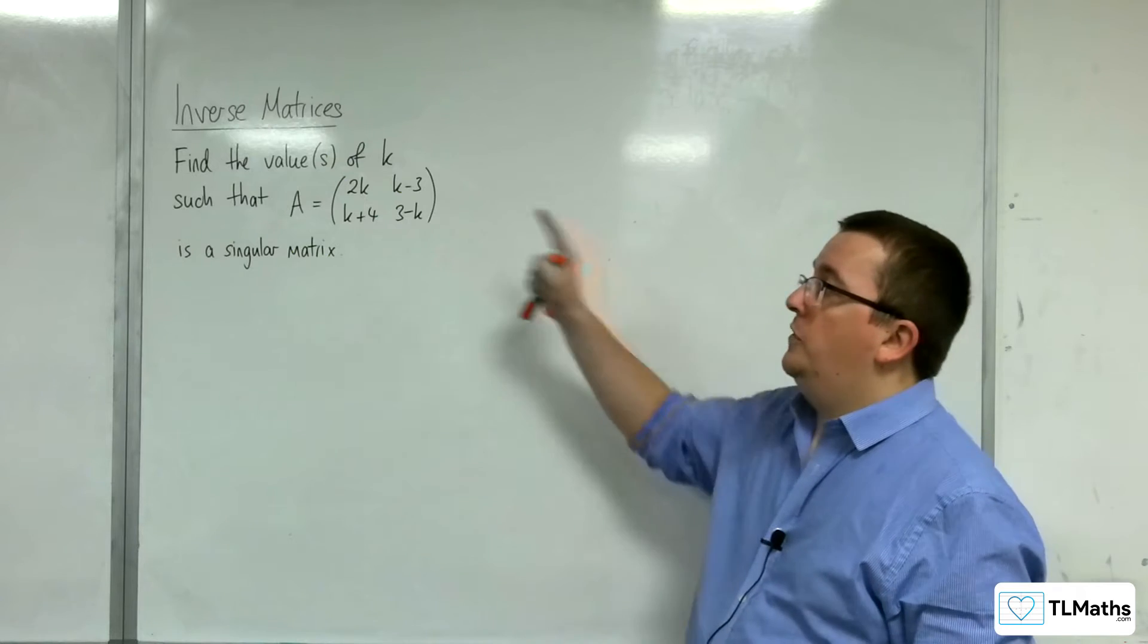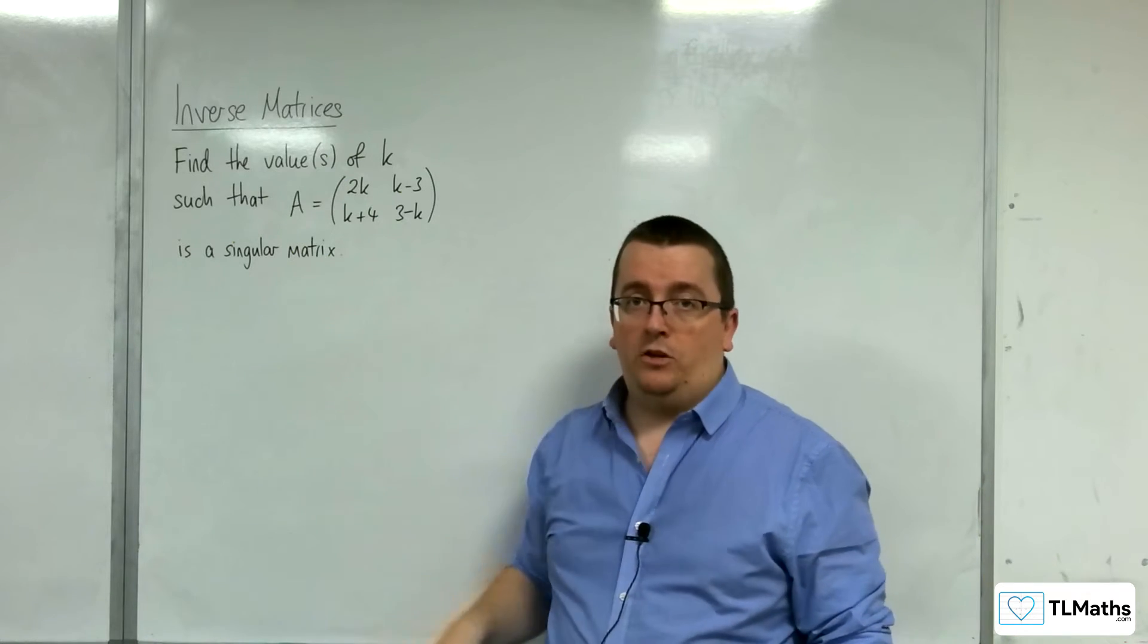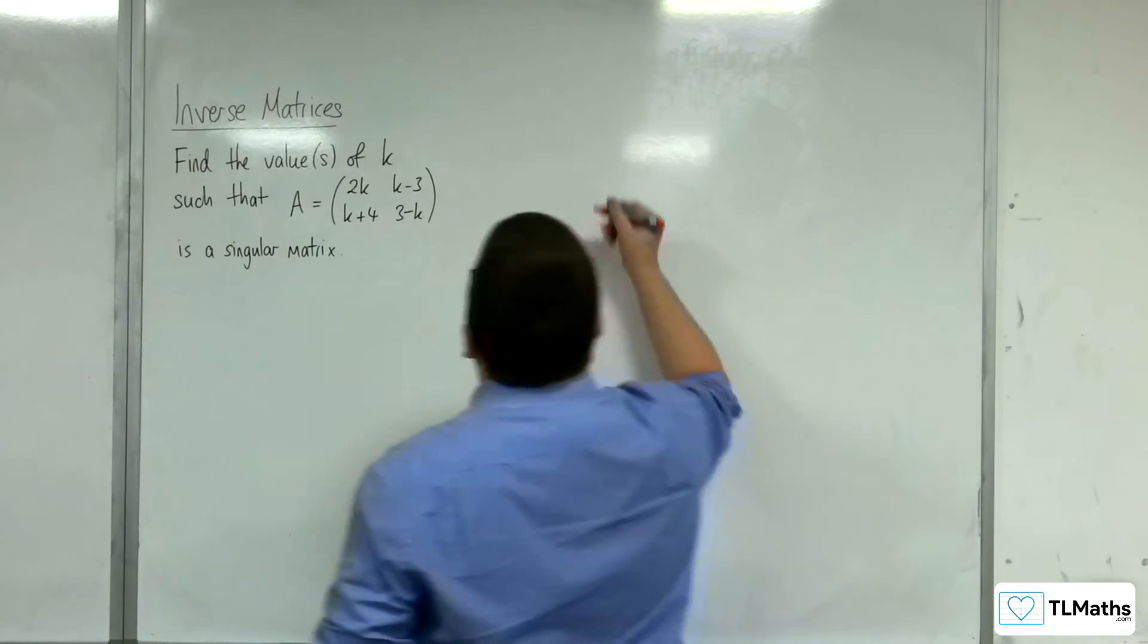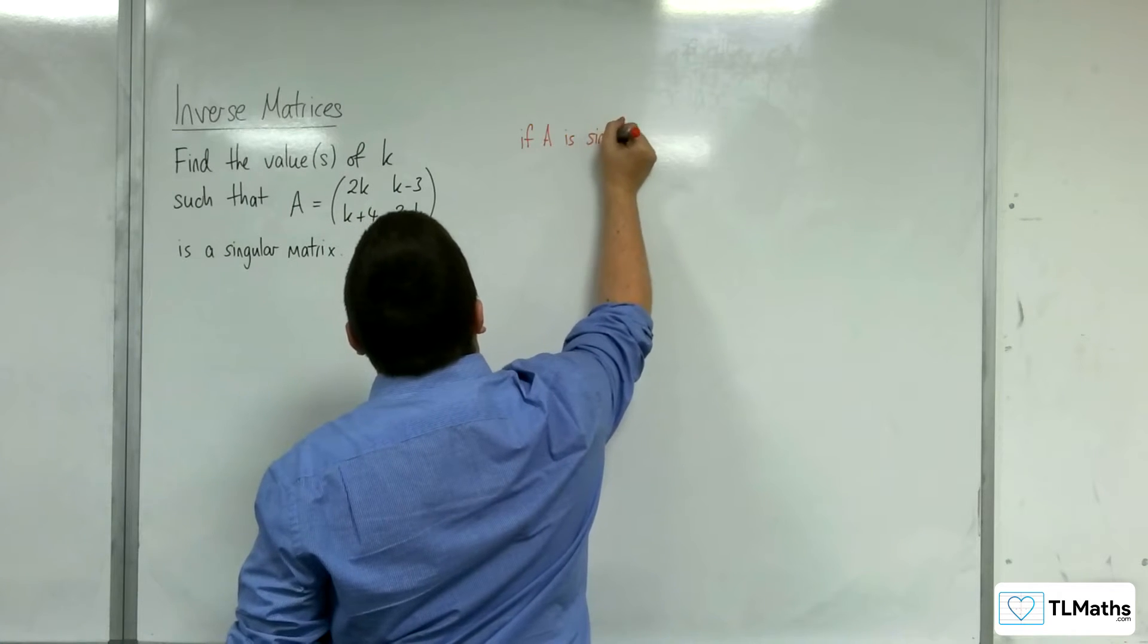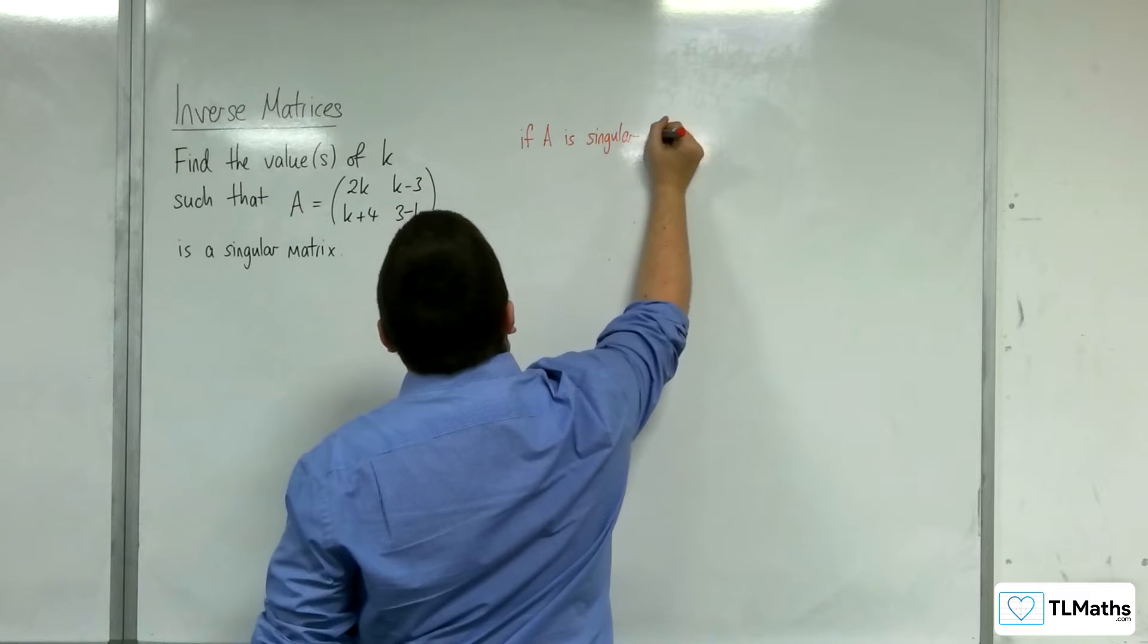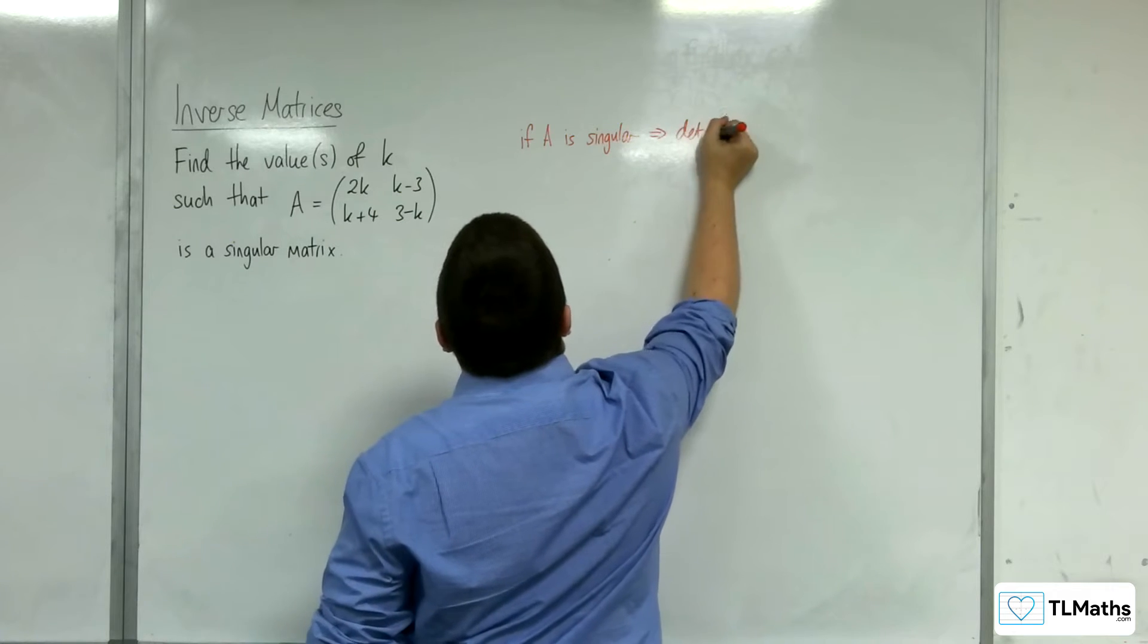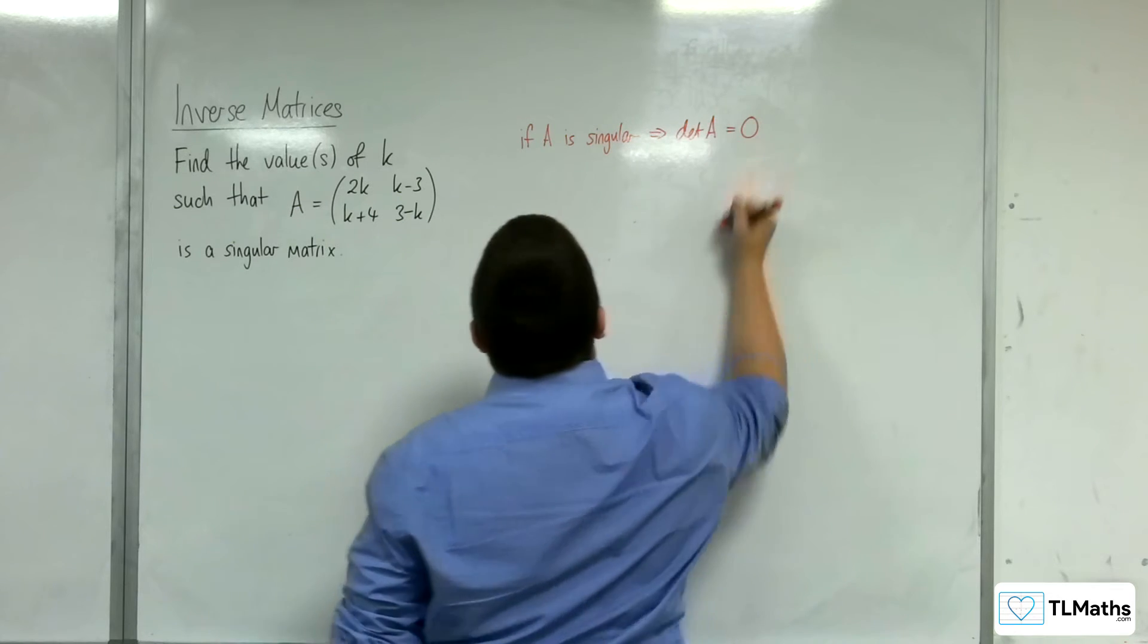We need to find the values of k such that the matrix is a singular matrix. If A is singular, this would imply that the determinant of matrix A is 0.